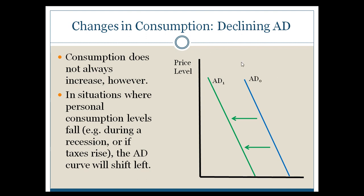Our current situation is certainly reflective of this. With people not going to movie theaters, not taking flights, not spending quite as much because they're nervous about the future, there's going to be a pretty substantial pullback of aggregate demand, and a huge portion of that pullback will be due to declining consumer spending within the economy — probably the biggest factor of all.